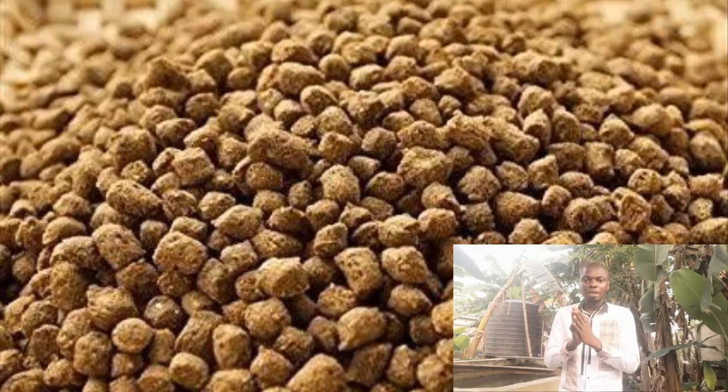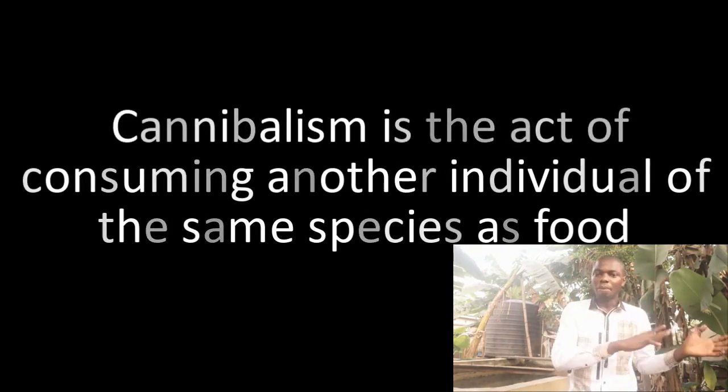The second factor that causes cannibalism is irregular feeding. If a fish is not hungry it won't want to eat another fish, so fish that are not well fed will start experiencing cannibalism. Cannibalism means a fish eats another fish as food. If the fish is well fed, you don't really experience cannibalism in your farm. So regularly and adequately feed your fishes.